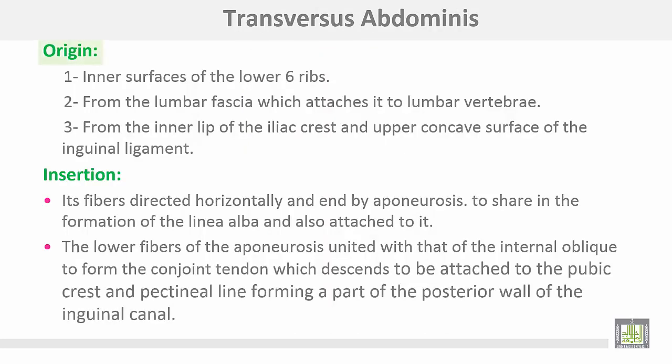The transversus abdominis muscle takes origin from the inner surface of the lower six ribs, from the lumbar fascia which attaches it to the lumbar vertebrae, from the inner lip of the iliac crest, and the upper concave surface of the inguinal ligament. Its fibers are directed horizontally to end in the aponeurosis, sharing in the formation of the linea alba. The lower fibers of the aponeurosis unite with those of the internal oblique to form the conjoined tendon.